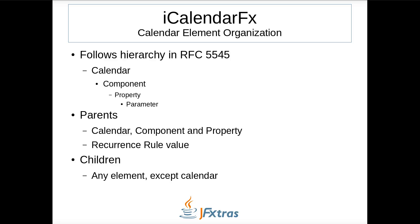Calendar information is contained in various calendar elements. The elements are organized in a hierarchy as defined in RFC 5545: namely, calendar, then component, followed by property, and then parameter. The calendar elements can be a parent, a child, or both. Parent elements include calendar, component, and property elements. In addition, the recurrence rule value, which is outside the normal hierarchy, is also a parent. All elements, except the calendar, can be a child.